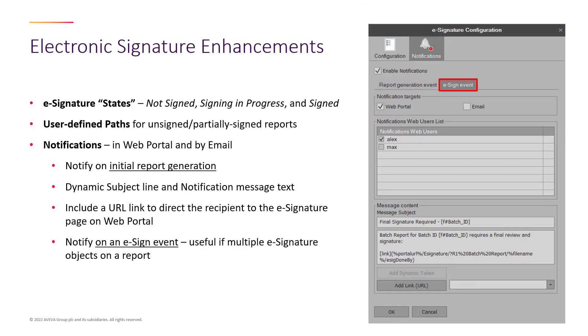The signing of reports can then be used as an event to trigger another level of signatures. In this example, Max will be notified that her approval is required once Alex signs it.